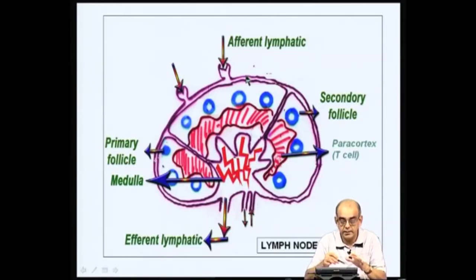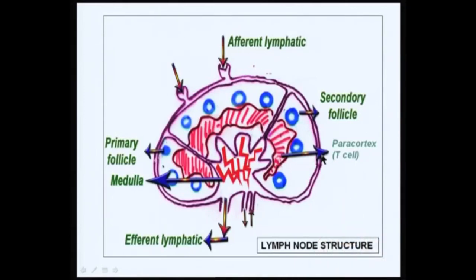We will leave it at this point and tell you more about the lymph node structure in the next class. To summarize what we have done today: we looked at how antigen presenting cells present antigen, how this presentation is detected by T cell activation, how all these various types of cells congregate in structures called lymph nodes, and we will get into the role of secondary lymphoid organs in the next class. Thank you very much.